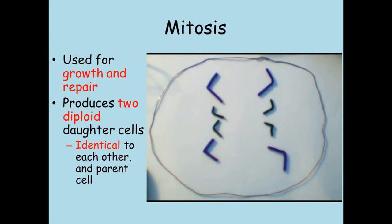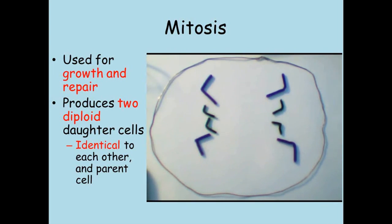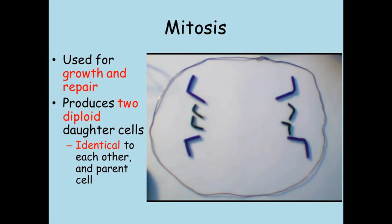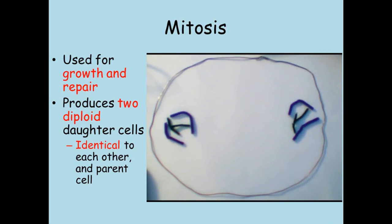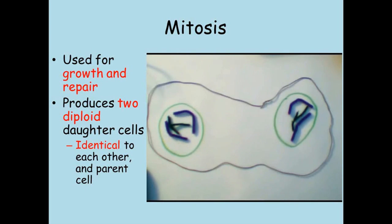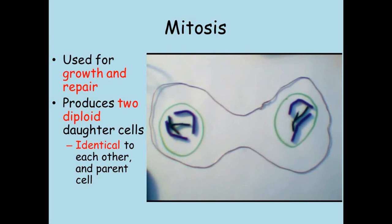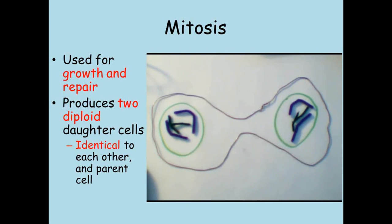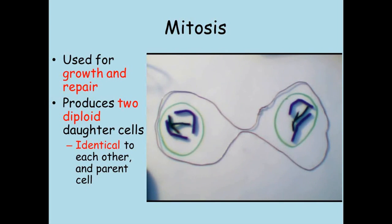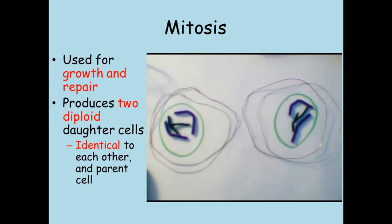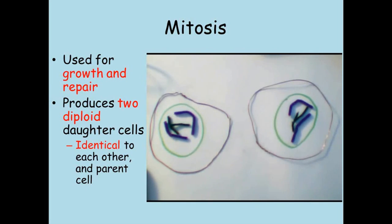A complete set of chromosomes are now found on each side of the cell. A new nucleus forms around each of these, after which the cell membrane splits the cell in two and two separate cells are made. It's important to notice that both of these cells are identical to each other and that they're diploid, making them normal body cells.